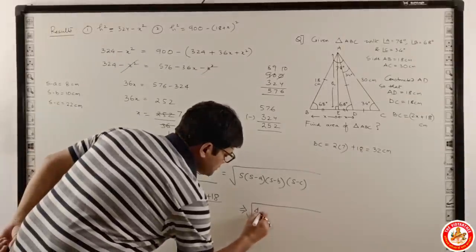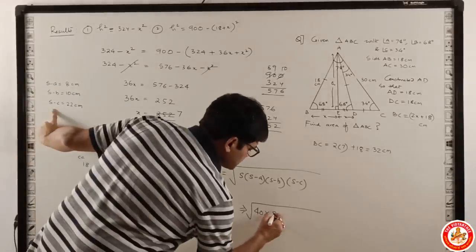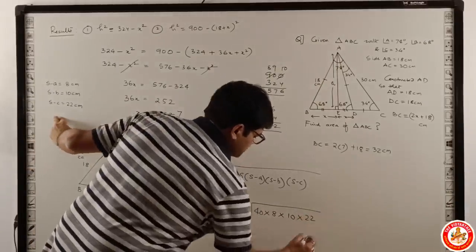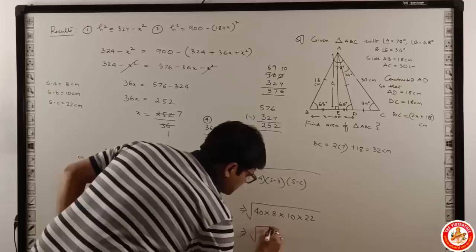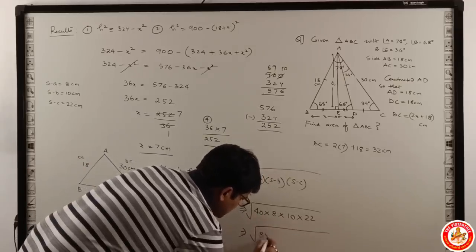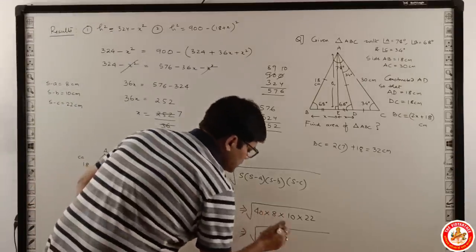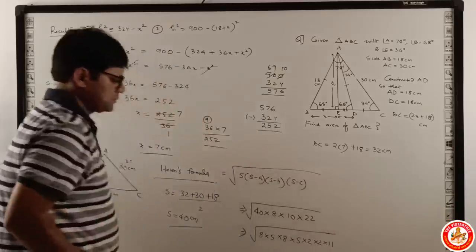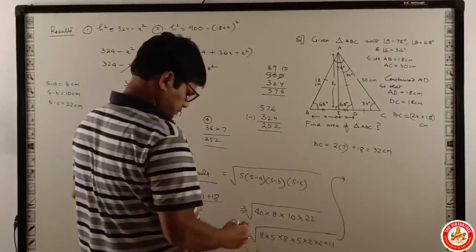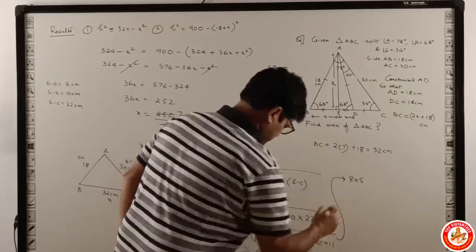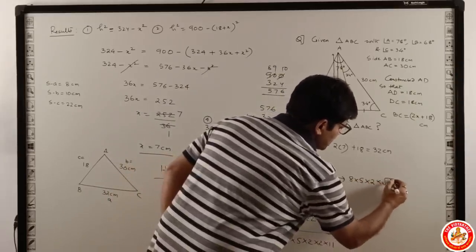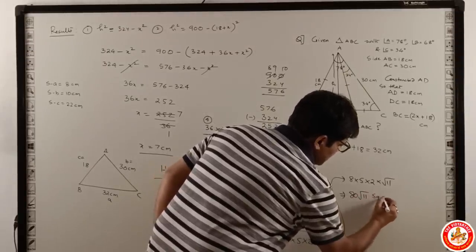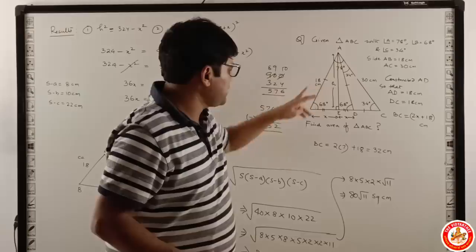I hope we can use these values here to our Heron's formula. So s is 40, s minus a is 8, s minus b is 10, and s minus c is 22. If you put this in the form of factors, 40 is 8 into 5, this is 8, 10 is 5 into 2, 22 is 2 into 11. So 8 into 8 is 64, which is 8 squared, 5 into 5 is 25, which is 5 squared, 2 into 2 is 4, which is 2 squared. This gives us 8 into 5 into 2 into root 11, which is 80 root 11 square centimeters. This is the area of the required triangle ABC.